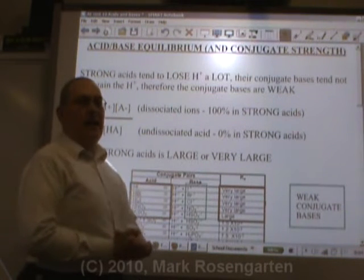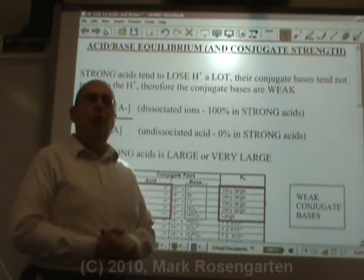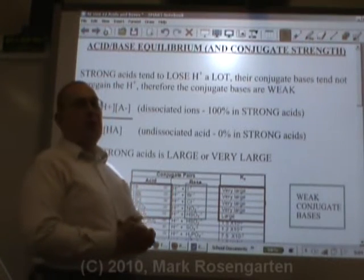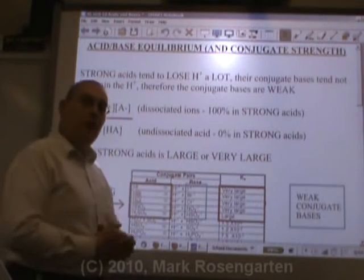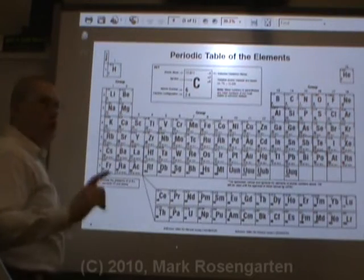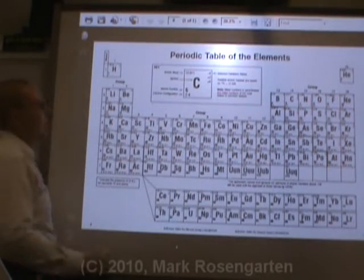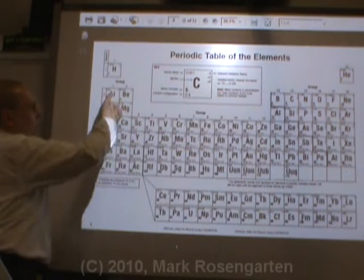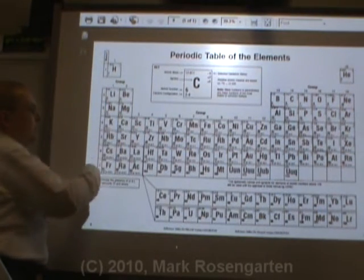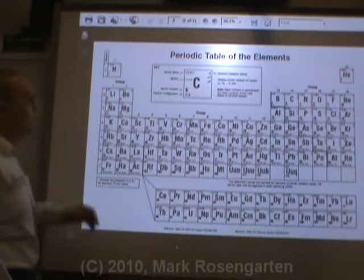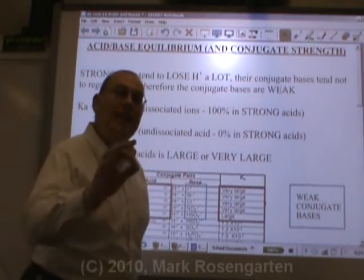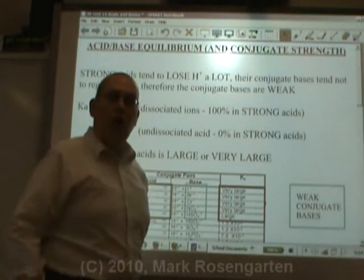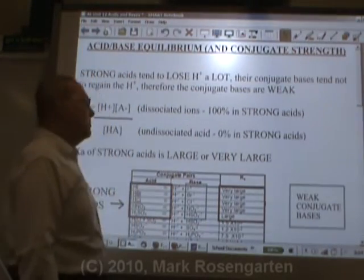And finally we get down to the idea of strong acids, weak acids, strong bases, weak bases. Now we already said that as far as Arrhenius is concerned, strong bases are hydroxides bonded to group 1 ions — lithium hydroxide, sodium hydroxide, potassium hydroxide, etc. Those are considered to be strong Arrhenius bases. But what about strong Bronsted-Lowry bases?